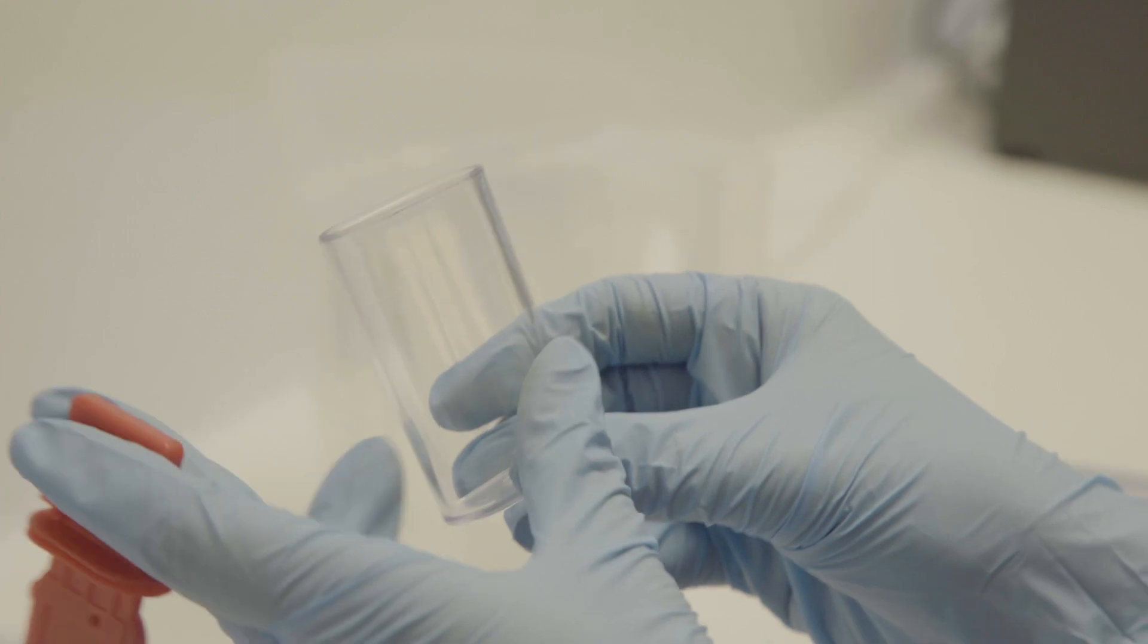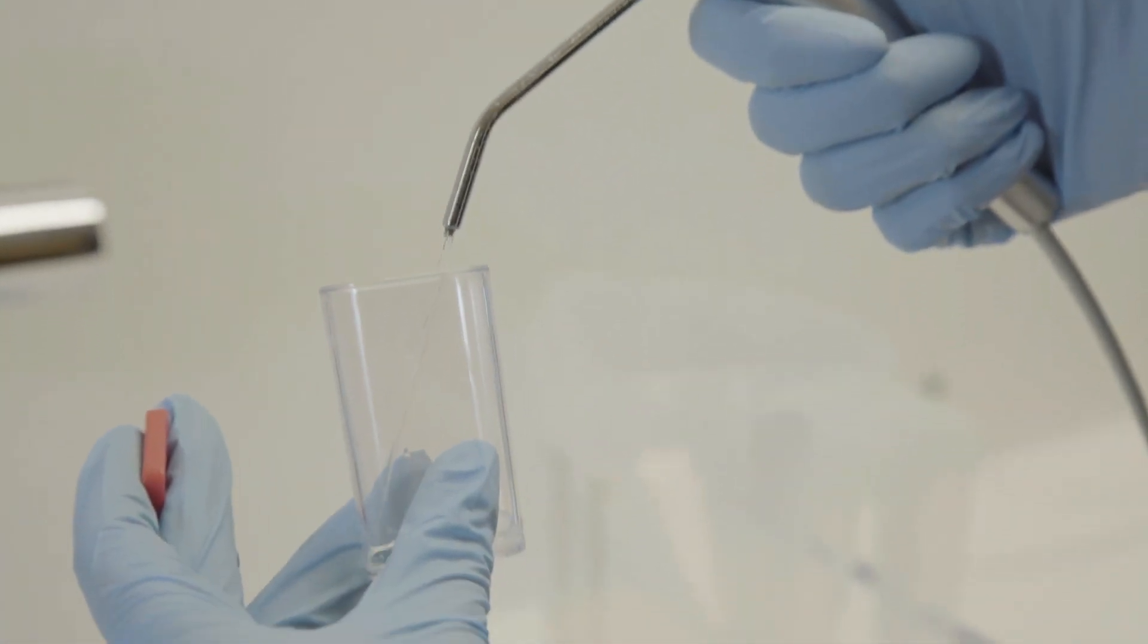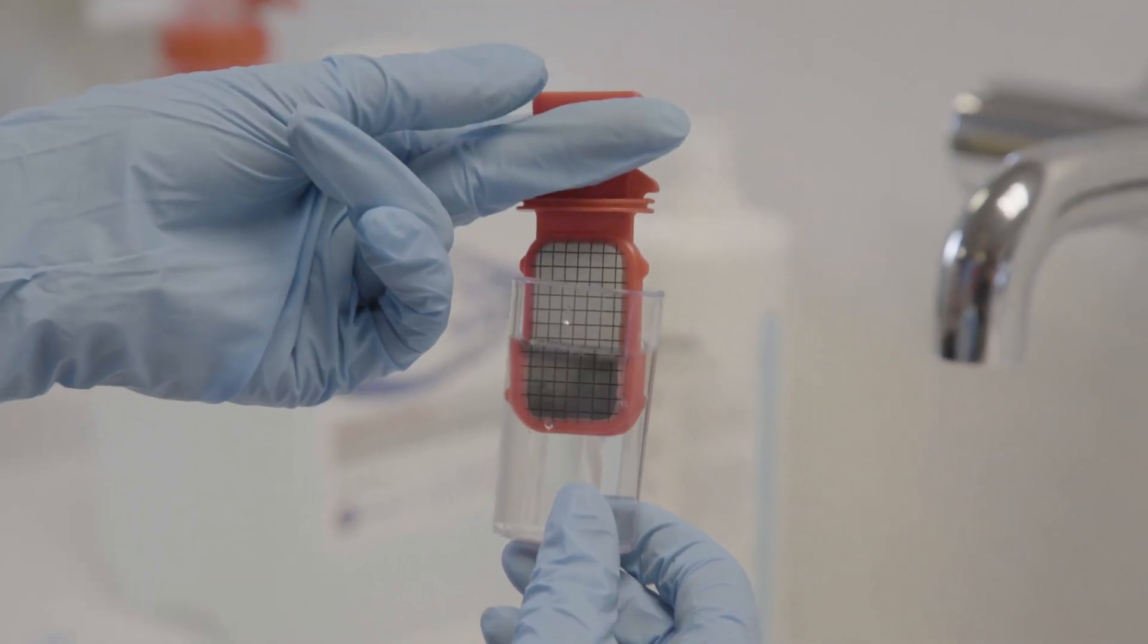Remove the paddle from the sample pot and fill to the 18mm mark from your 3-in-1 syringe. Place the paddle back into the pot and close securely.